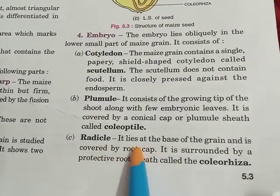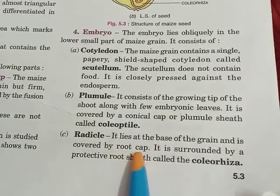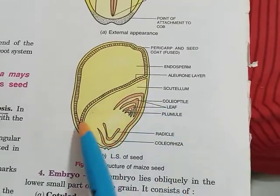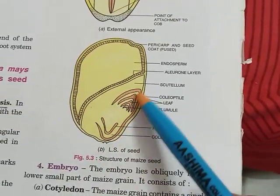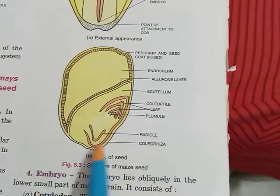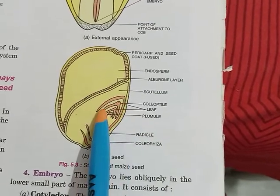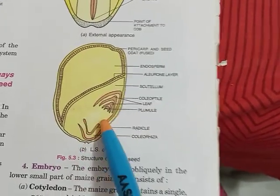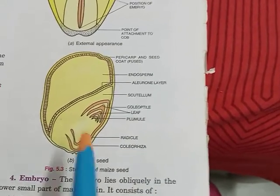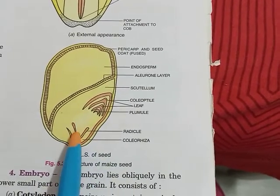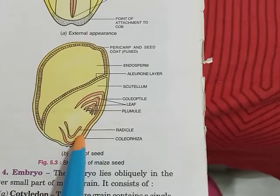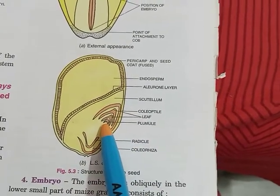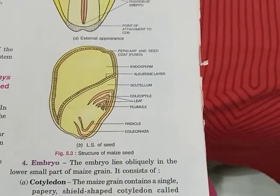The radicle lies at the base of the grain and is covered by a root cap. It is surrounded by a protective root sheath called the coleorrhiza. So, the coleoptile protects the plumule and the coleorrhiza protects the radicle.